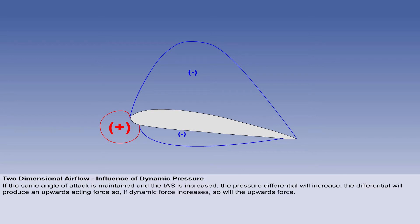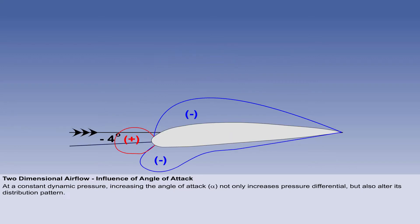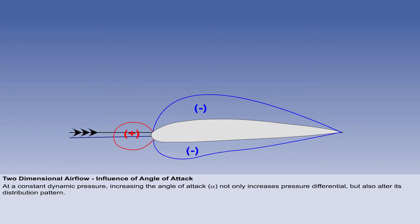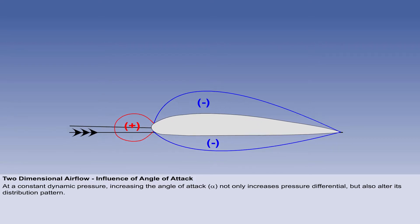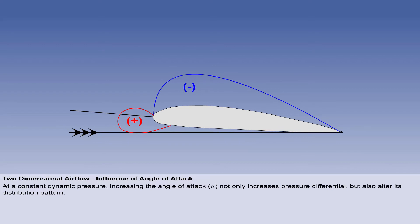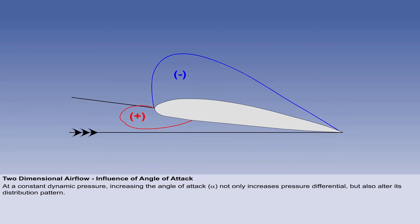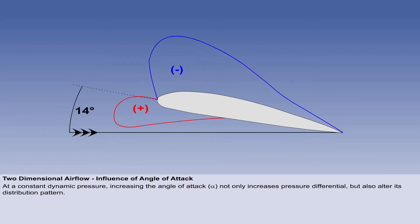So if dynamic pressure increases, the upwards force increases. At a constant dynamic pressure, increasing the angle of attack, or alpha, will also increase the pressure differential, but will also alter its distribution pattern.